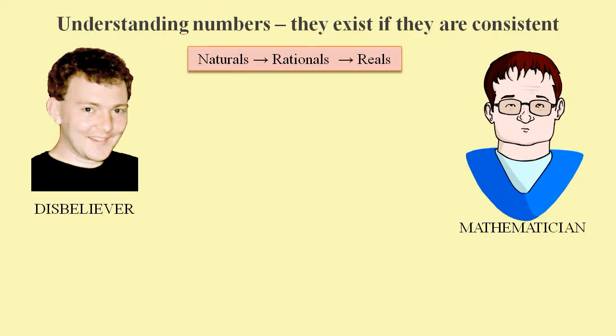The claim is that so-called real numbers can be constructed from the rational numbers, which in turn can be constructed from natural numbers. So first we must accept that all natural numbers exist.